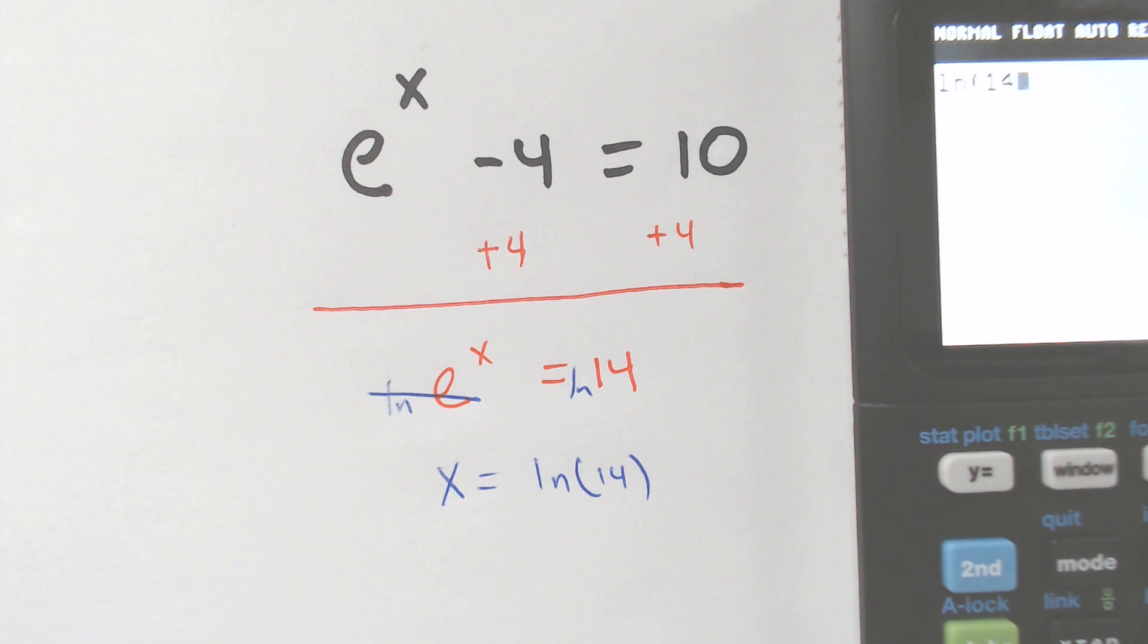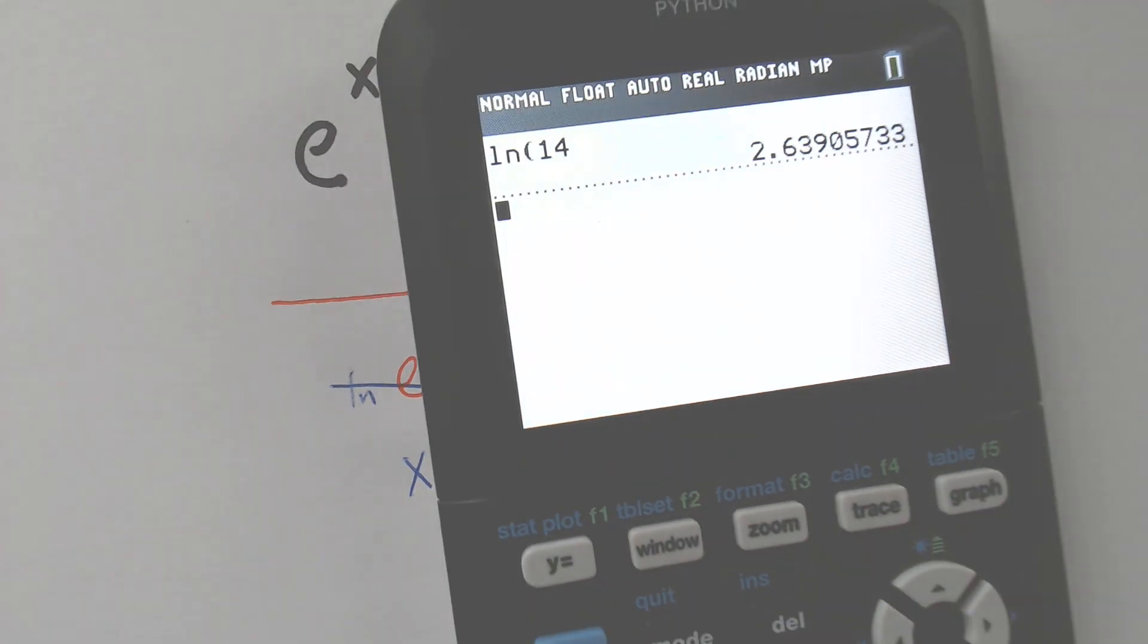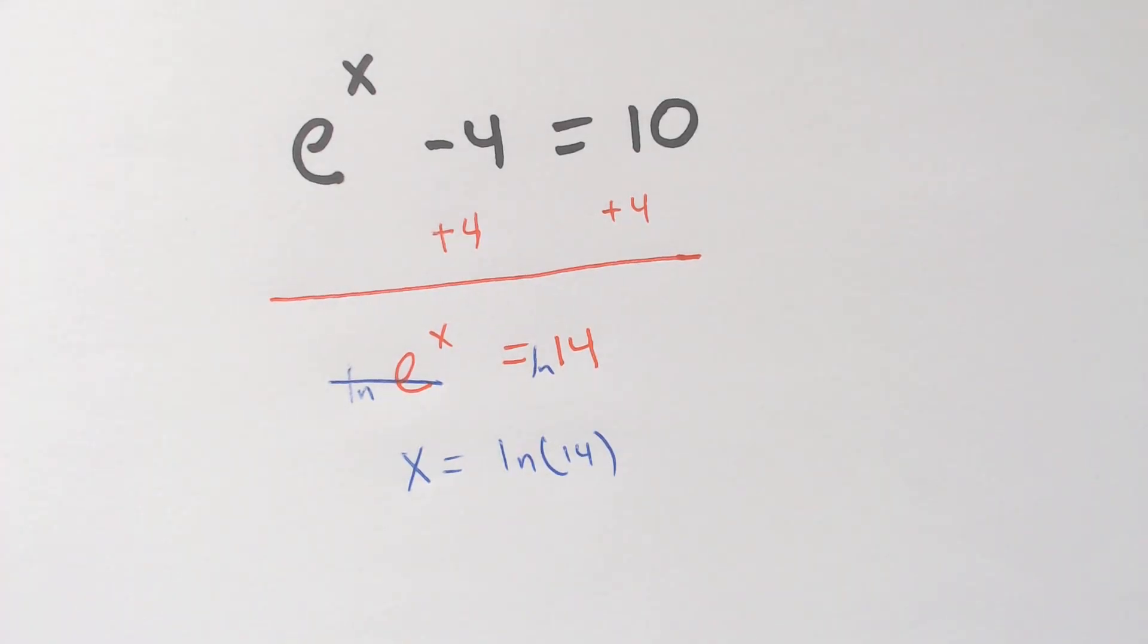Where's LN? LN 14. Equals 2.63. 2.639. So X is equal to 2.639.